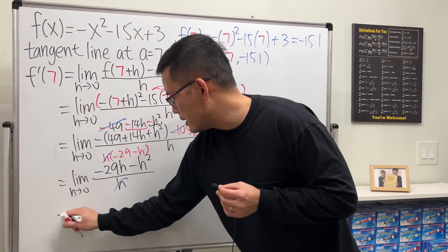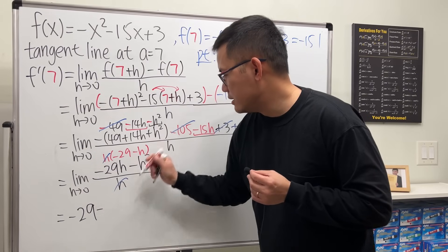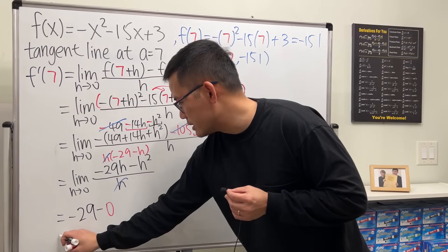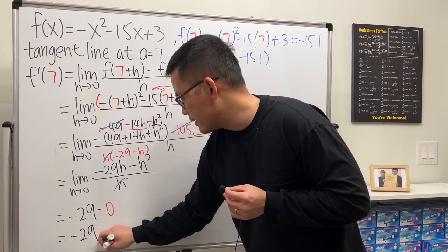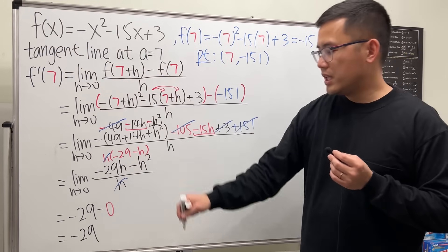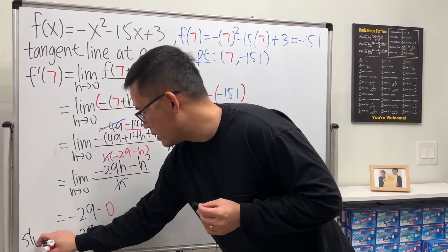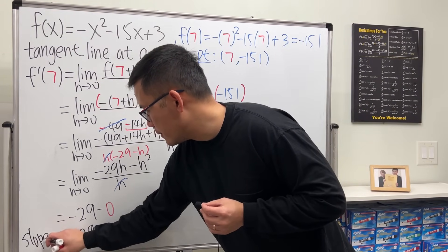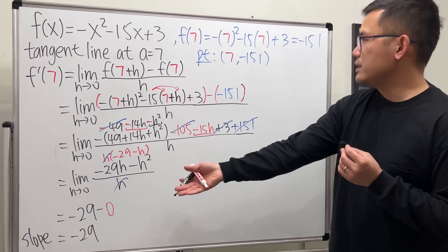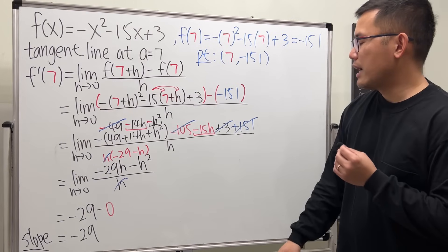Finally, we plug in h = 0, so we get negative 29 minus 0, which is just negative 29. That's the derivative, giving us the slope. The slope is negative 29.